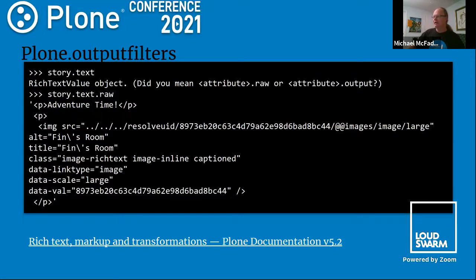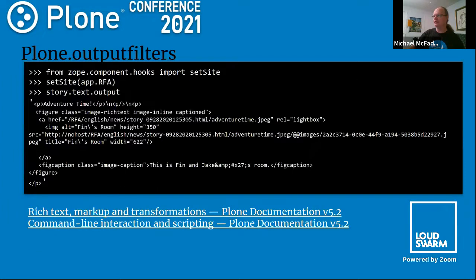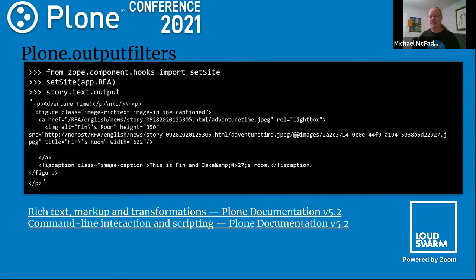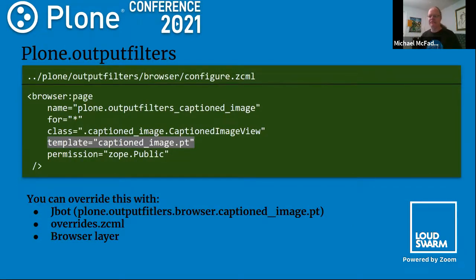What actually happened is Plone output filters grabbed that text field value and did something to it. If we look at the raw value in the Python console, all we have is a plain image tag. But once it goes through a magic output filter, you end up with a nicely wrapped figure element — the image gets linked and there's a figcaption. Something happened between the raw text and the output text. That's Plone output filters — specifically the captioned image filter. When I first saw this, I said there's magic going on here and I need to know how every single thing works.